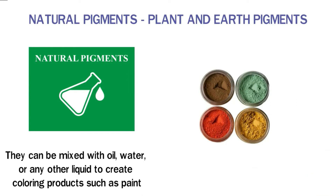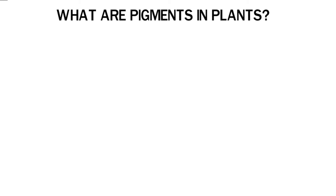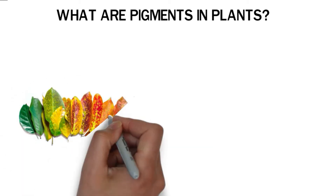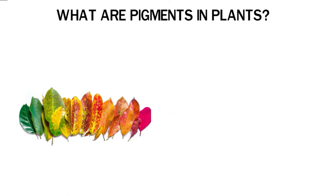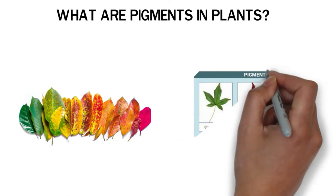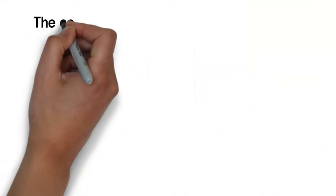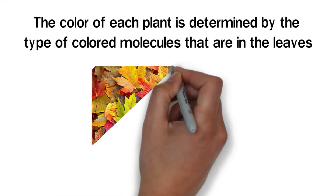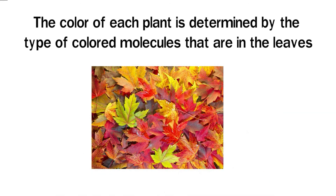Some natural pigments can be used as food colorants while others are used to create art. Plants contain colored molecules that account for their unique colors. The colors may range depending on the species of the plant and the environment it is in. There are four main types of plant pigments, and the color of each plant is determined by the type of colored molecules in its leaves. The intensity of these colors may vary depending on the amount of molecules in each plant.